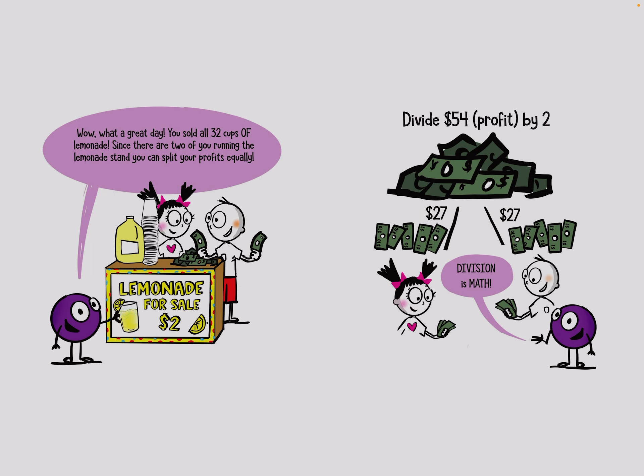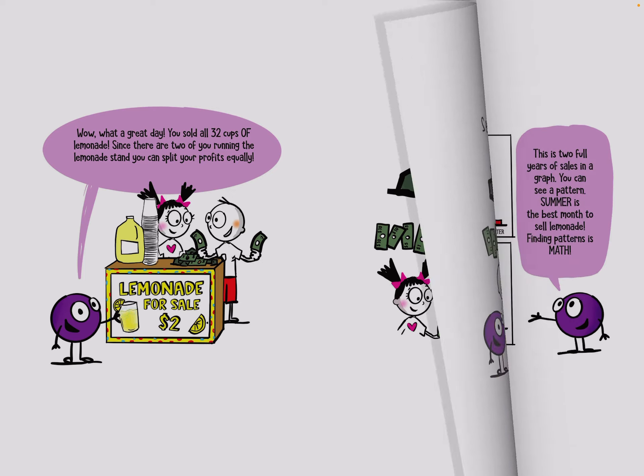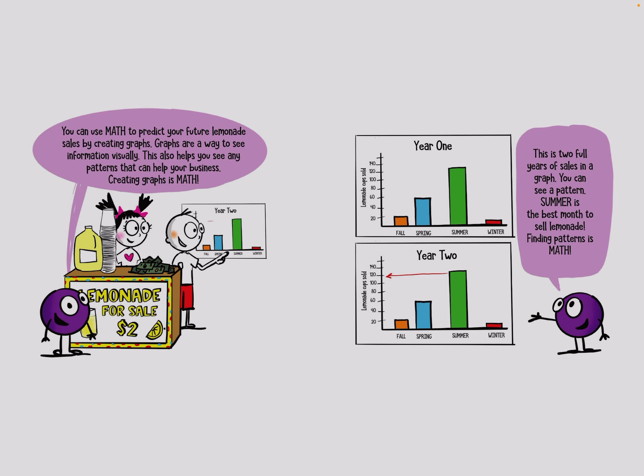Wow, what a great day. You sold all 32 cups of lemonade. Since there are two of you running the lemonade stand, you can all split your profits equally. Divide $54 profit by 2. Division is math. You can use math to predict your future lemonade.